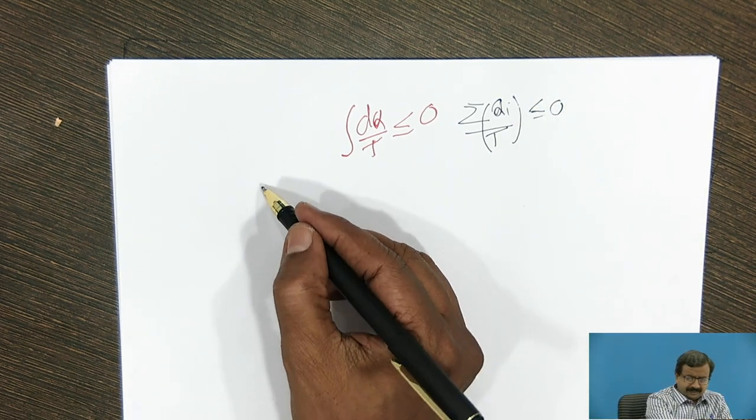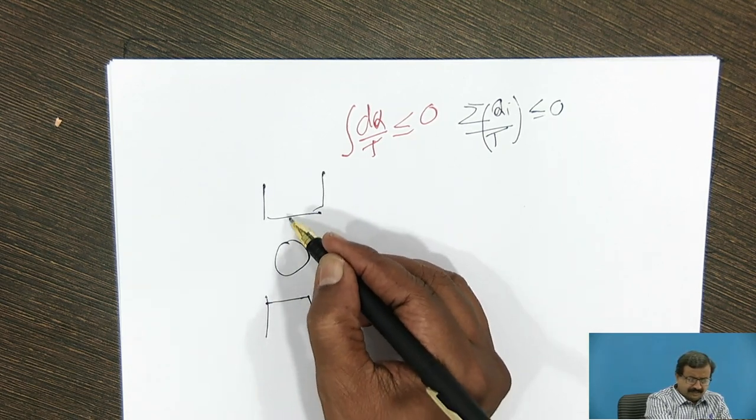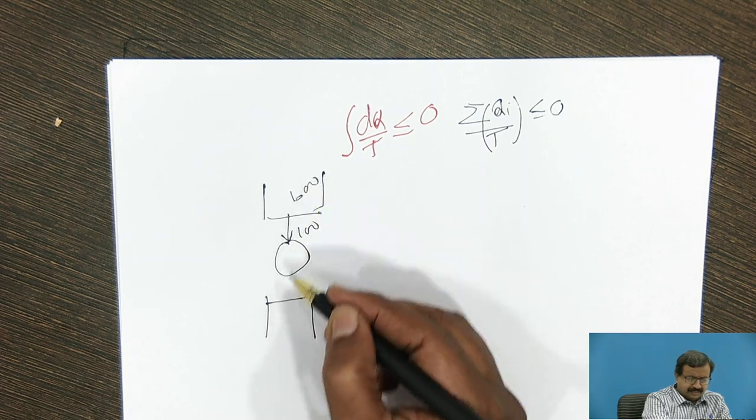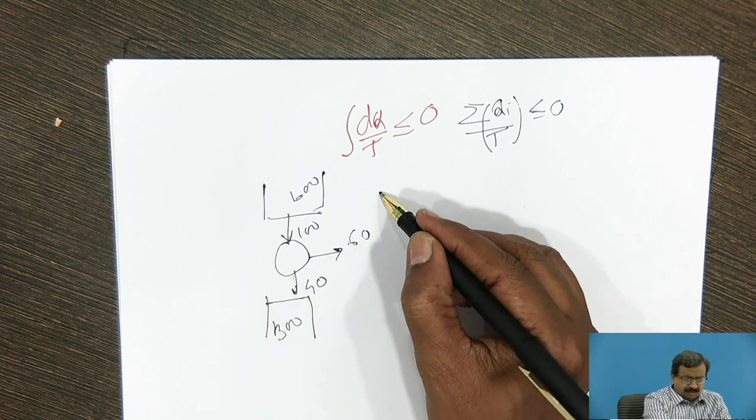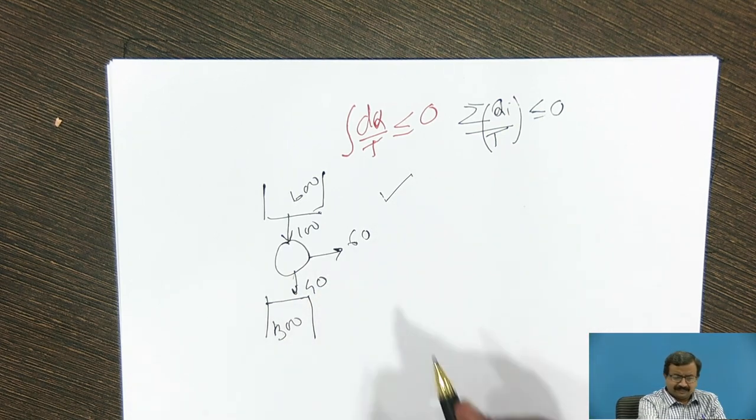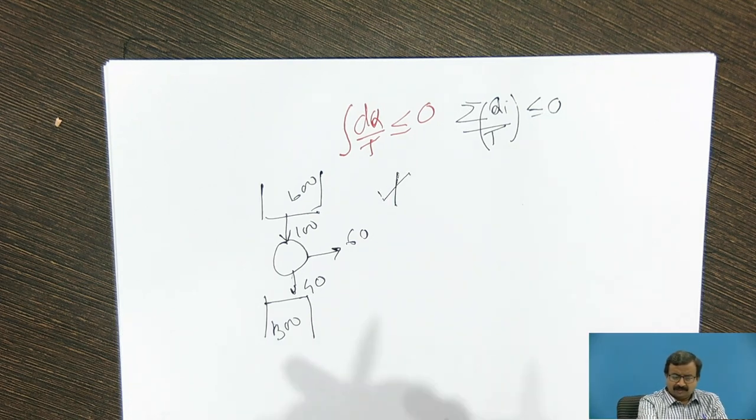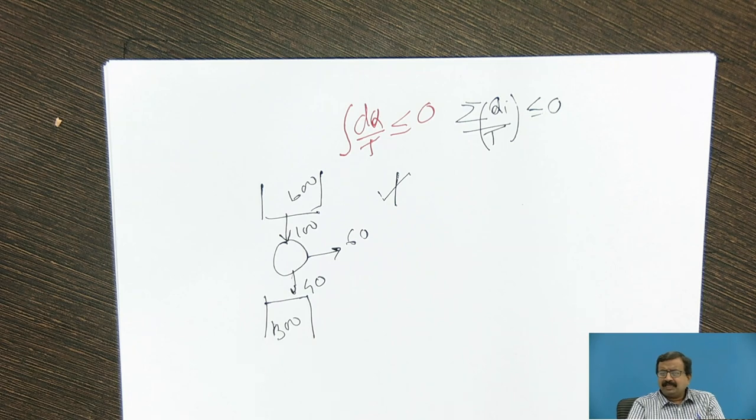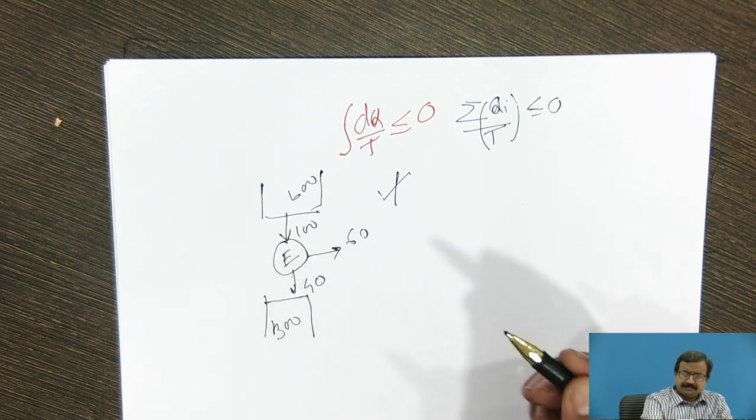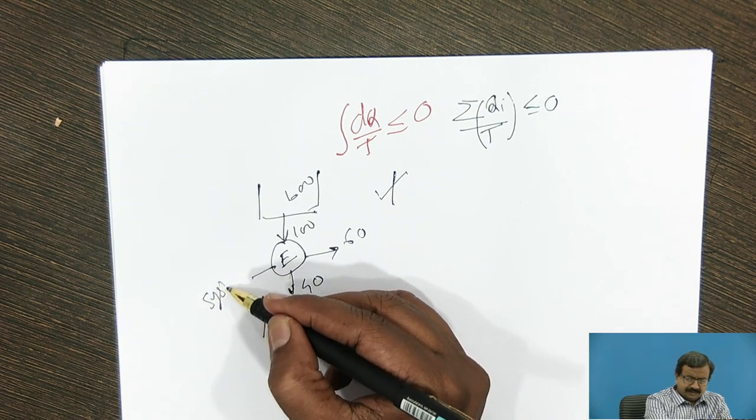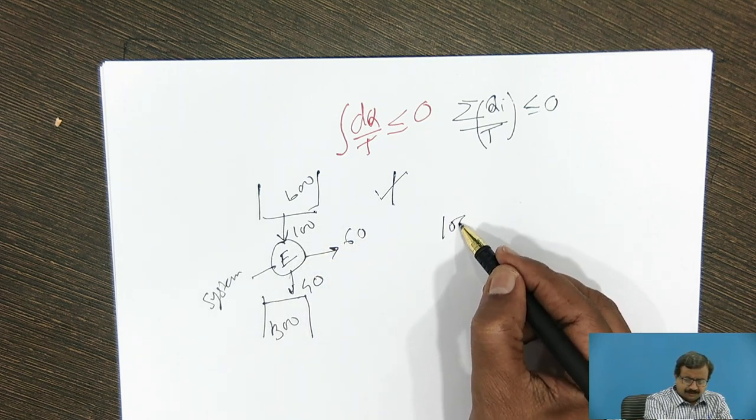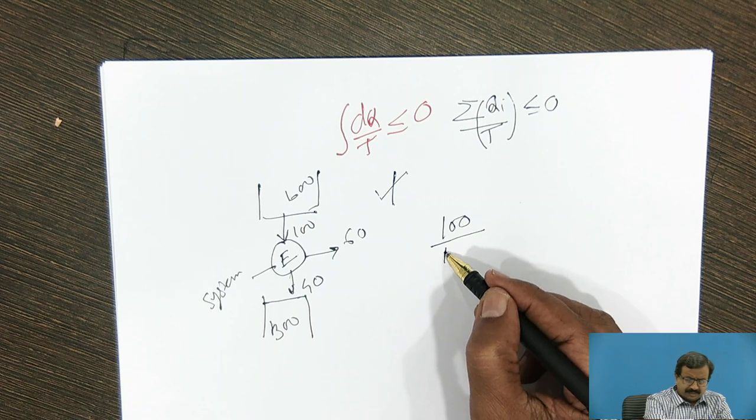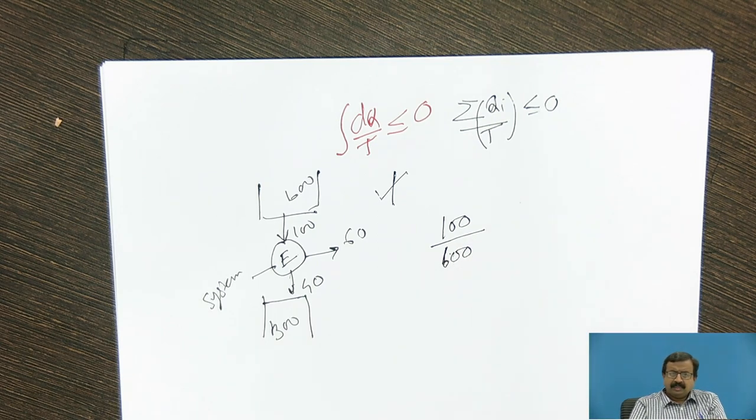Now take the same example, the previous example. And whenever we say that this is 100, this is 600, this is 300, and we'll take the second case in which Carnot has said that efficiency is not correct. And that's why by Carnot theorem, it is not possible. Now I take the proof with the help of your Clausius inequality. What Clausius inequality says, if this is the engine, then engine is my system. So, heat supplied to the engine is 100 joule. At what temperature it is supplied? 600.